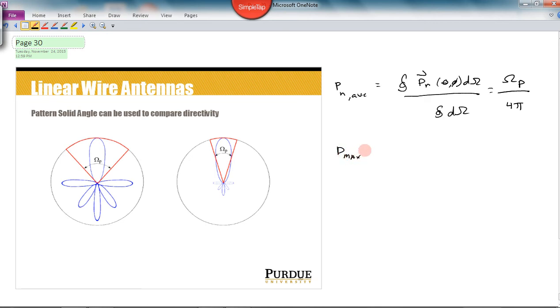The max directivity of an antenna is defined as the same normalized power density function. But this time we're dividing it instead of the volume of a sphere here, we're looking at whatever the average value of the normalized power density function is. And that turns out to be just the opposite of this, which is 4 pi over omega p.